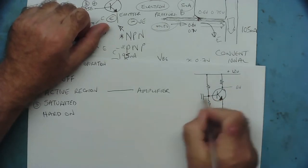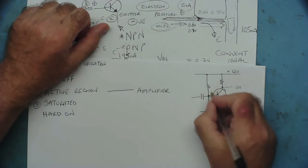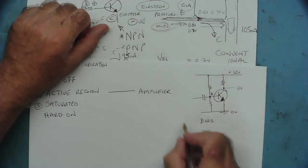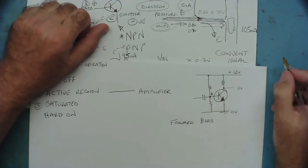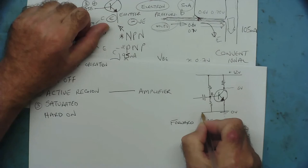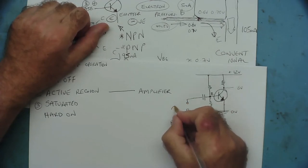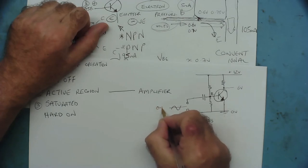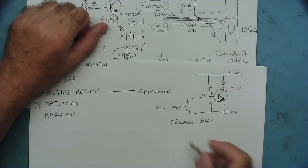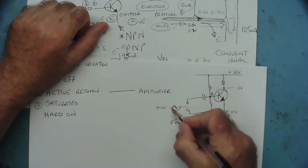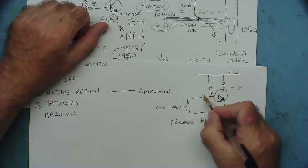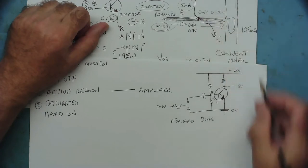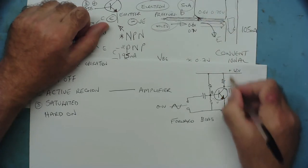Now we can put a capacitor here to block DC - we don't want to change the DC voltage on the base. This voltage on the base is called the bias; because it's positive with respect to the emitter, this is forward bias, so the transistor is forward biased. Now let's say we put an AC signal between ground and here, with a peak-to-peak of about 0.1 volts. When the voltage is on the positive half cycle of the wave, through the capacitor it will increase the voltage at the base, so the transistor will turn more on and more current will flow.